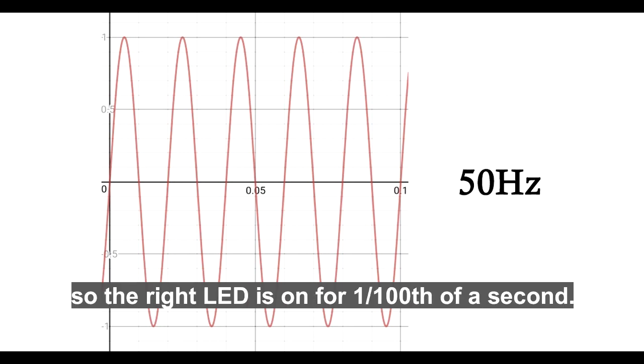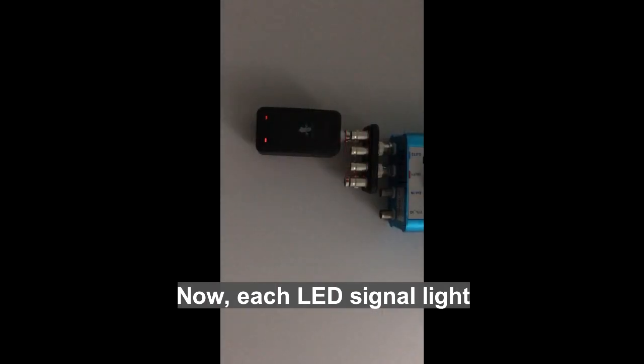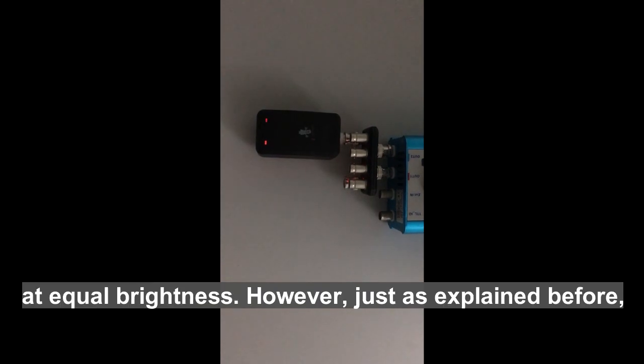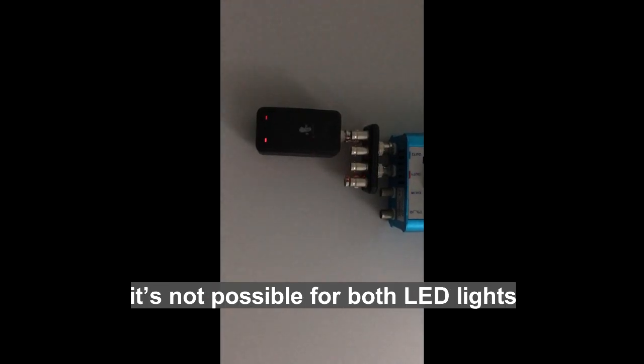So the right LED is on for one hundredth of a second. Now each LED signal light will appear to be on constantly at equal brightness.